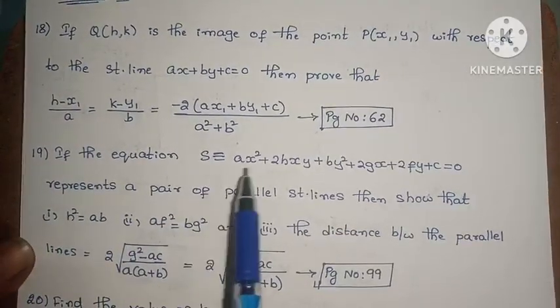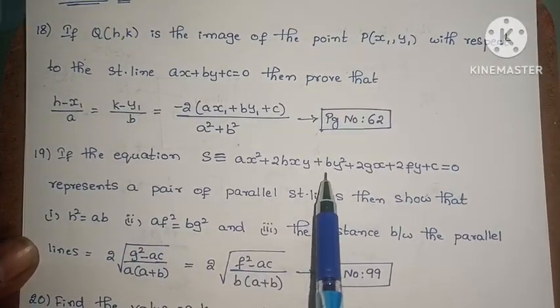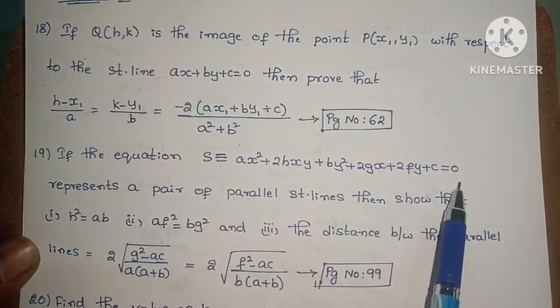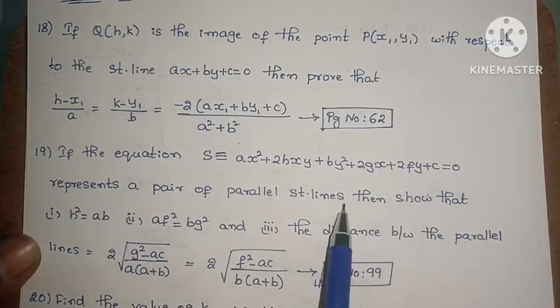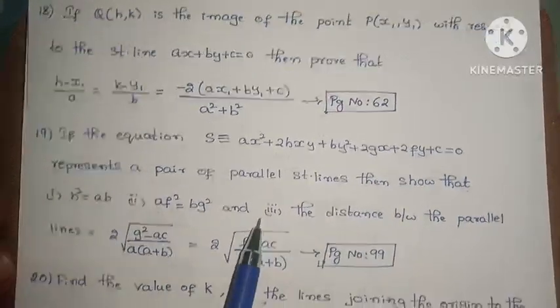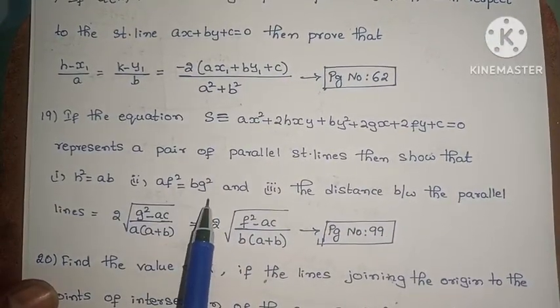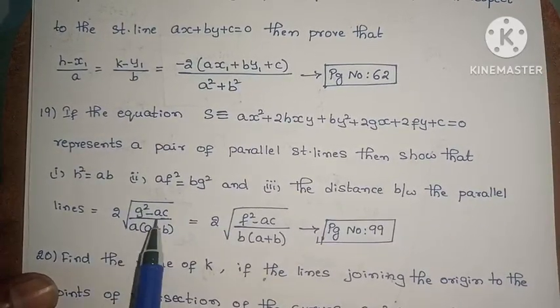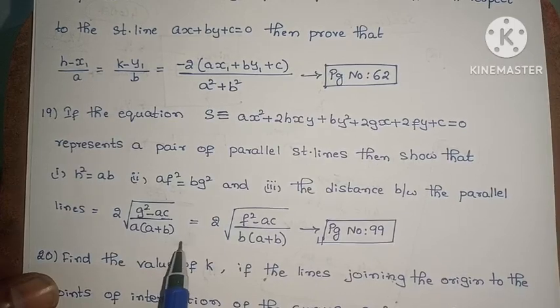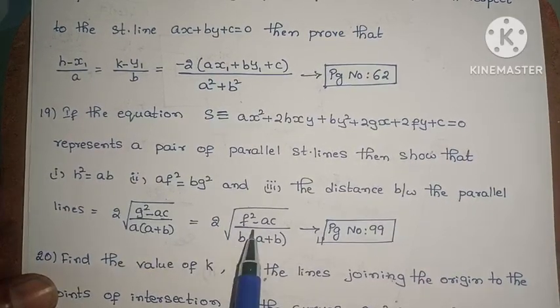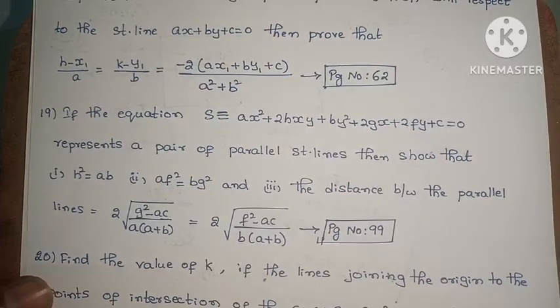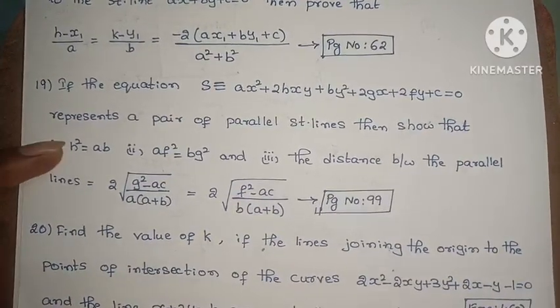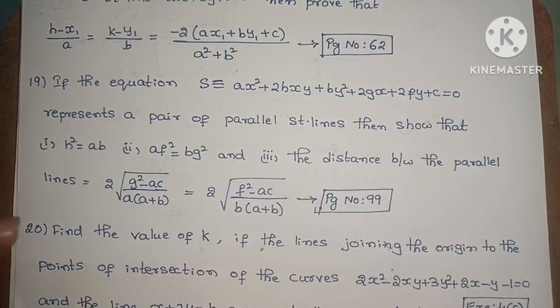If the equation S equals ax squared plus 2hxy plus by squared plus 2gx plus 2fy plus c equals 0 represents a pair of parallel straight lines, then show that h squared equals ab, af squared equals bg squared, and the distance between the parallel lines is 2 root g squared minus ac divided by a times (a plus b). Page number 99, this is proof.